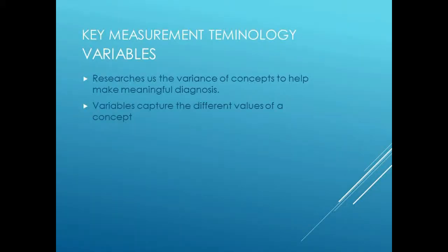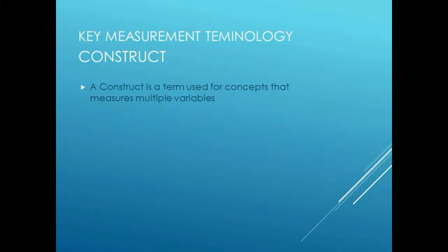We also look at the concept of variables. Variables are what researchers use to measure things — researchers use the variants of concepts to help make meaningful diagnoses of a situation. Variables capture different values and have different meanings in concepts, so it's important that we measure the variables and understand what the variation means. Finally, we look at a construct — a number of variables that are measured together to have some sort of meaning.